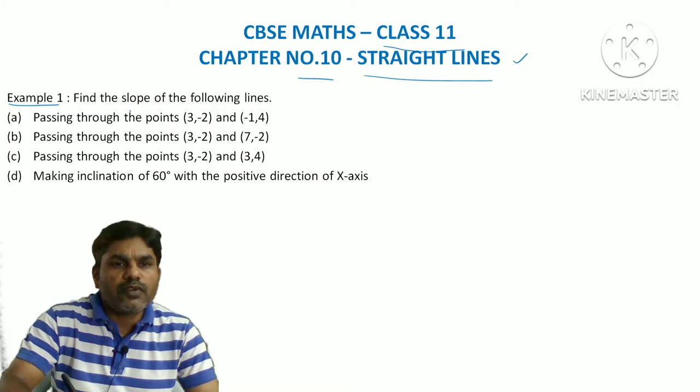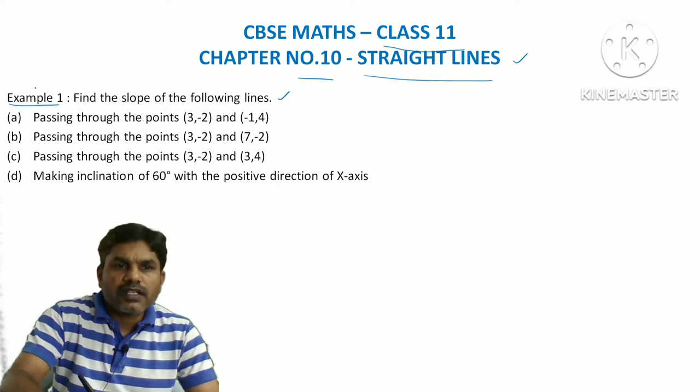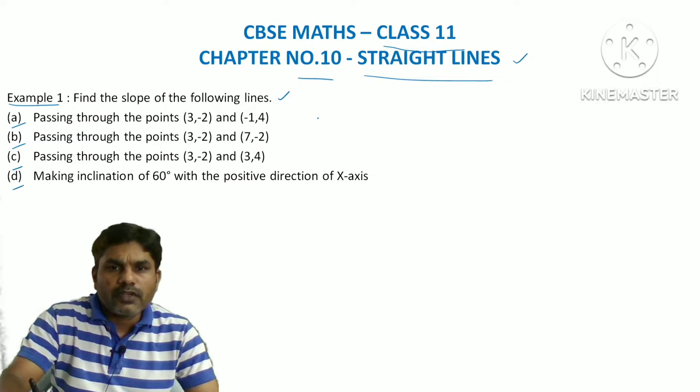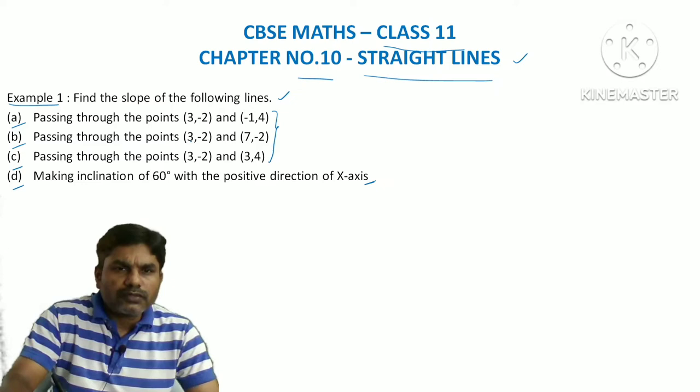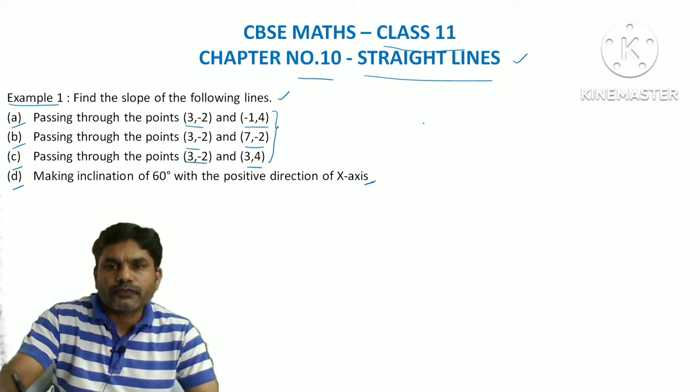In Example 1 of the chapter Straight Lines, they are asking us to find the slope of the following lines. They have given four questions: a, b, c, and d. The first three are of the same type and the fourth one is different. The problem asks: find the slope of the following lines passing through the given points.